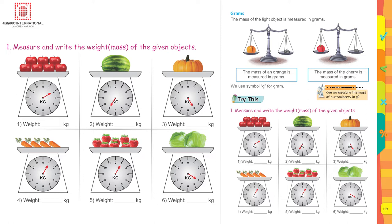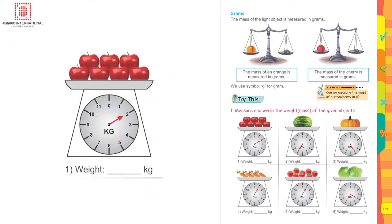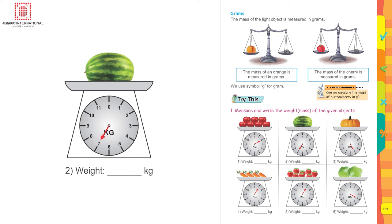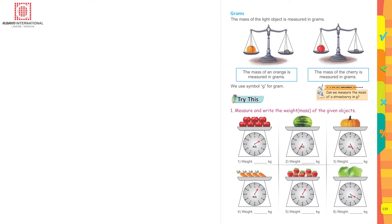Now, this is a weighing machine showing the weight of objects placed on the pans. Look at the picture and write how much these objects weigh. In the first picture, there are apples — the needle is showing two kilograms. In the next picture, the weight of a watermelon is seven kg.